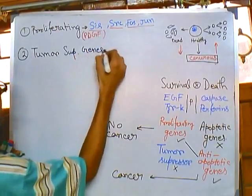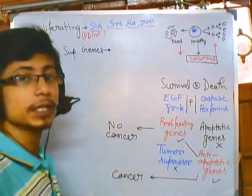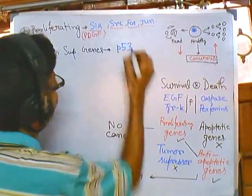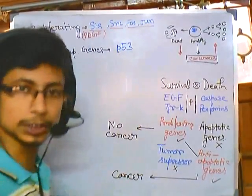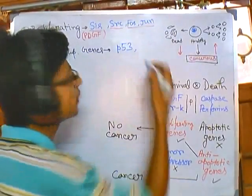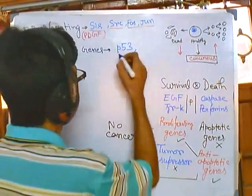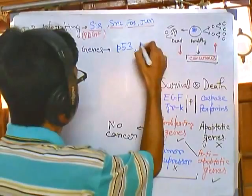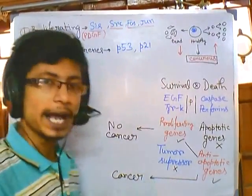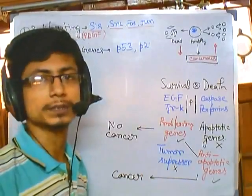For tumor suppressor genes, very important examples are p53 and p21. These genes act as tumor suppressor genes, blocking the proliferation of cells by activating many different types of proteins.